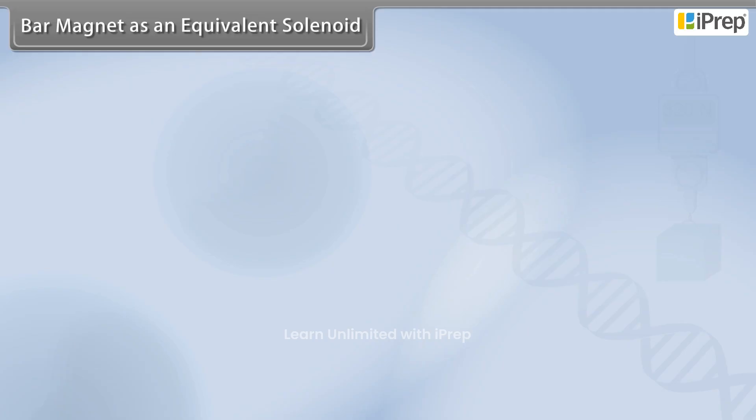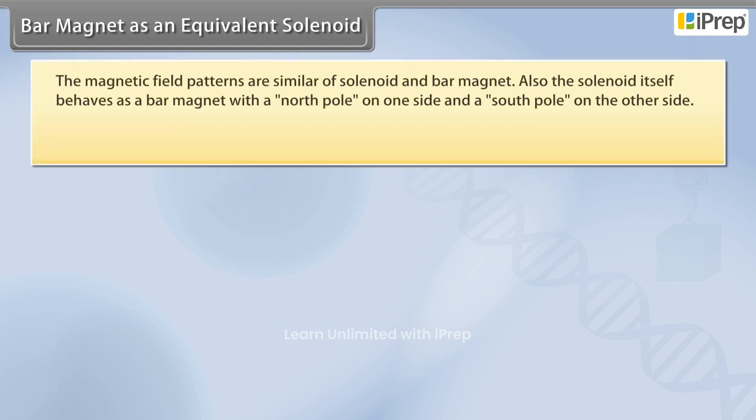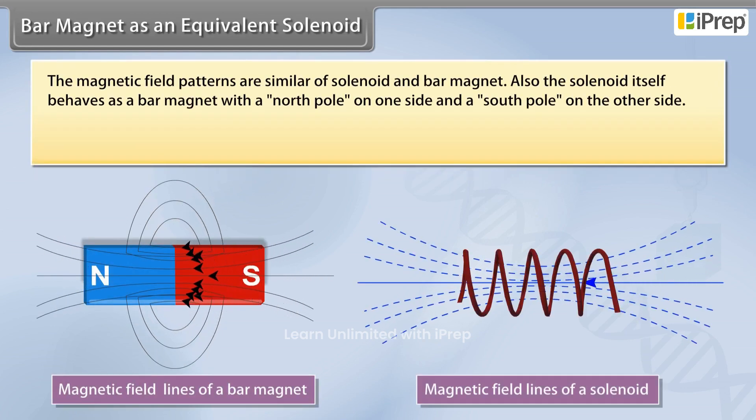Bar Magnet as an Equivalent Solenoid. The magnetic field patterns are similar for a solenoid and bar magnet. Also, the solenoid itself behaves as a bar magnet with a north pole on one side and a south pole on the other side.